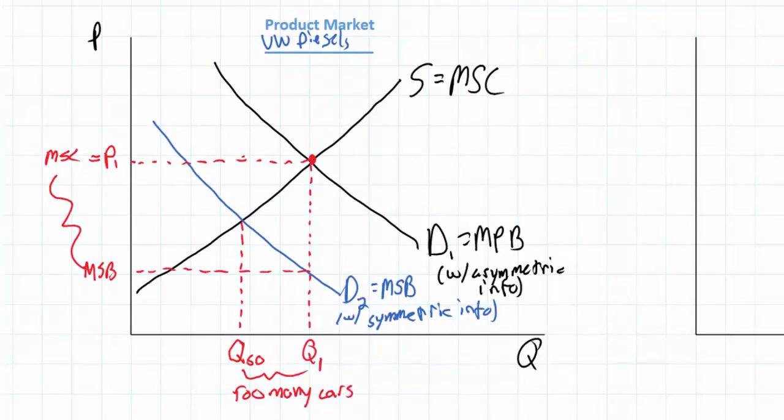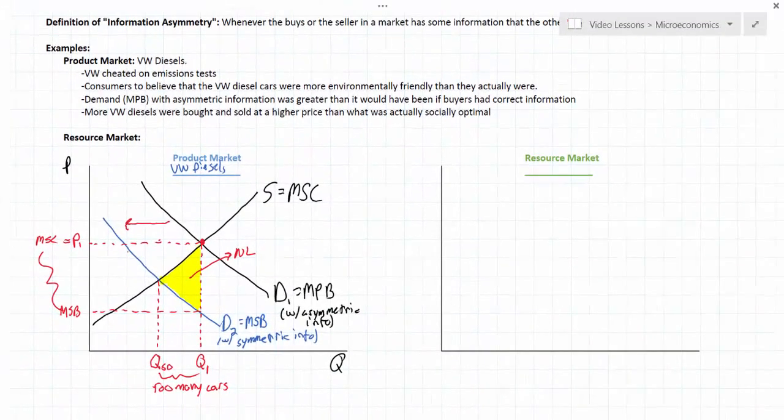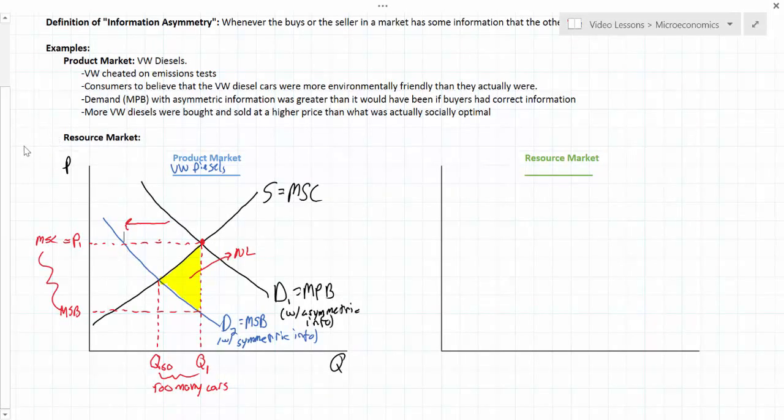The effect that this has on total welfare in the market is quite easy to see now. In fact, it looks a lot like a negative externality of consumption diagram. We have a loss of total welfare equal to this whole triangle. This yellow triangle represents the loss of welfare among consumers who bought a car that they believed was more environmentally friendly than it actually was. This is our welfare loss. With more perfect information about the real environmental impact of these cars, demand would have been lower and a more socially optimal number of cars would have been purchased and driven. So the existence of asymmetric information in the product market of Volkswagen automobiles led to an over allocation of resources towards these cars.